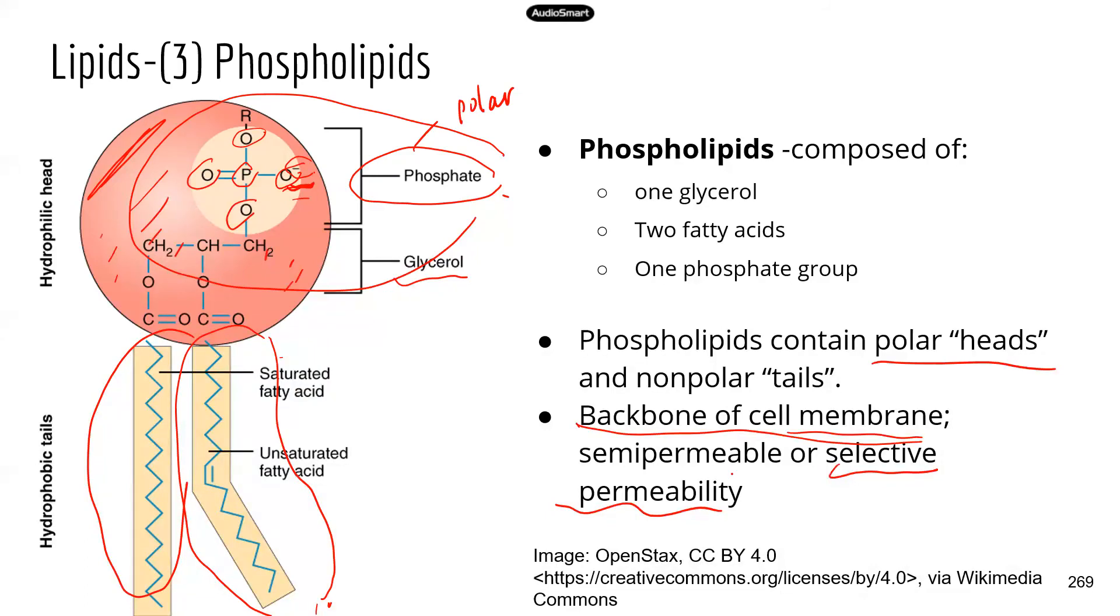The cell membrane is kind of like the door of your house. It controls what can come in, what can go out. So it has this selective permeability. It's only permeable to certain molecules, but not others.